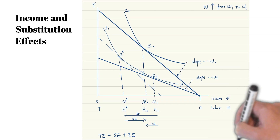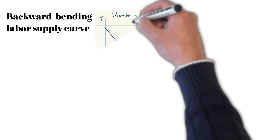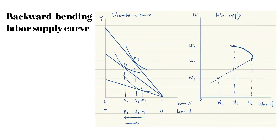The substitution effect and income effect of a wage increase move in opposite directions. If the substitution effect dominates the income effect, the individual will work more. If the income effect dominates the substitution effect, the individual will work less. That is why a backward-bending labor supply curve is possible. When the wage rate is low, an increase in wage causes an increase in labor supply. When the wage rate is extremely high, an increase in wage rate leads to a decrease in labor supply.